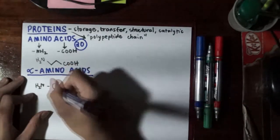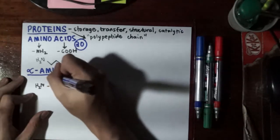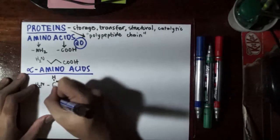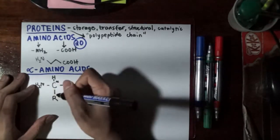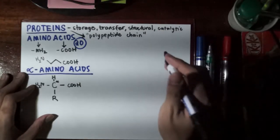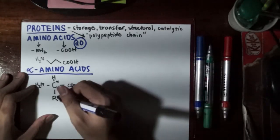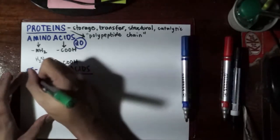To complete that, since carbon needs four bonds and we have two bonds already, there should be a hydrogen here and an R here. We know that R could mean some alcohol group, but later on, we will know that there are specific R groups for the 20 amino acids.